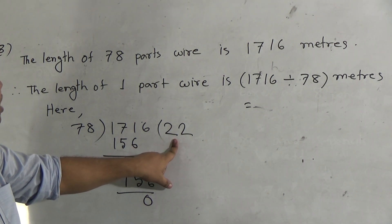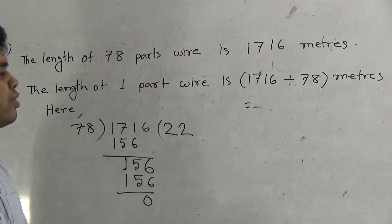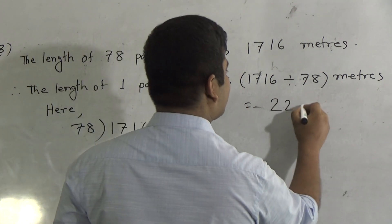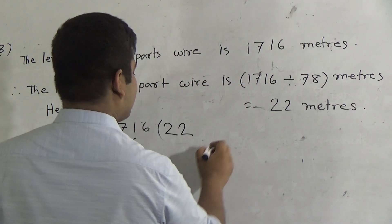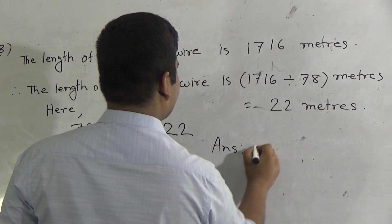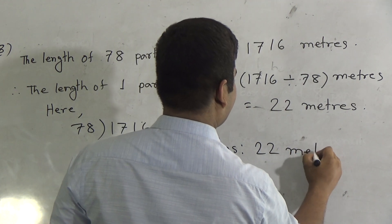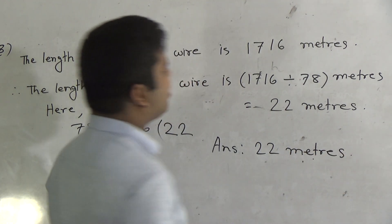So, the part of wire is 22 meters. So, I write here 22 meters. So, answer 22 meters. I hope you have understood.